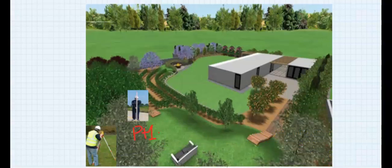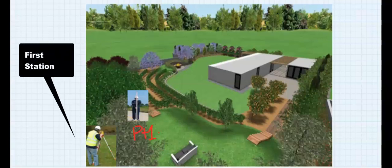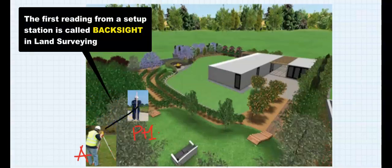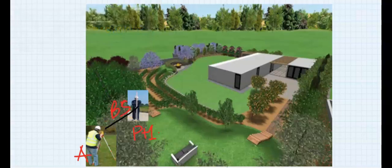Where you position your instrument, call it Station A. The next step is to take a sight on the leveling staff. This first reading is called a backsite — the first reading you took after positioning your instrument. Let's assume that the backsite recorded is 1.850.